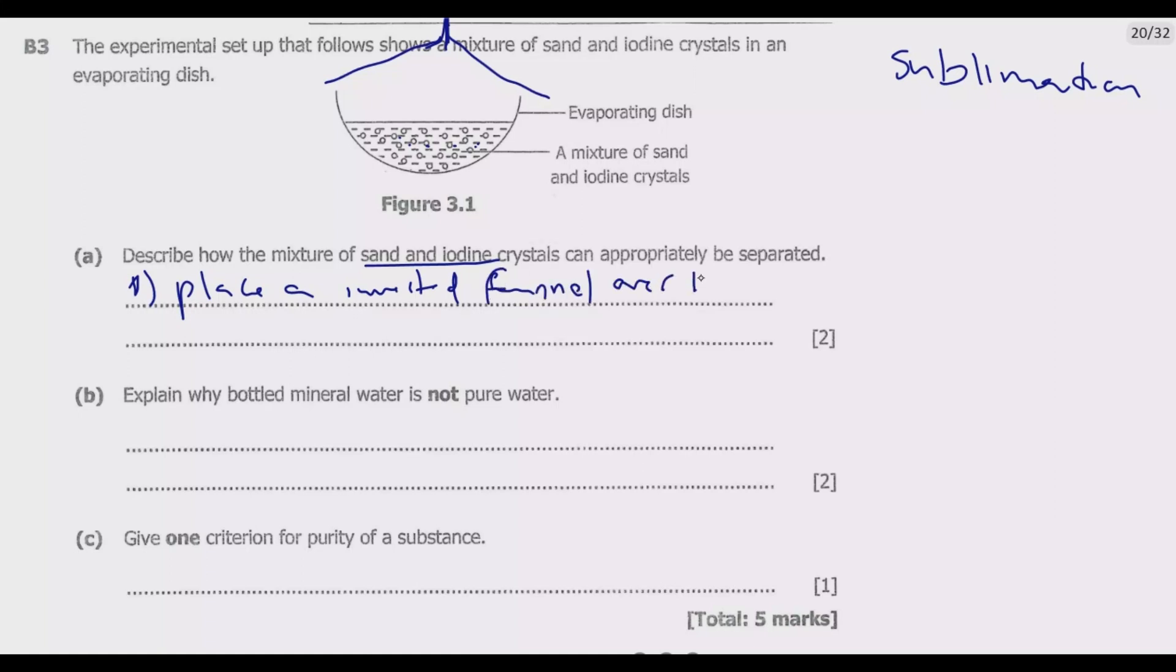The second step is we heat the mixture gently. When we heat the mixture gently, the iodine crystals will sublime and the iodine gas will rise.